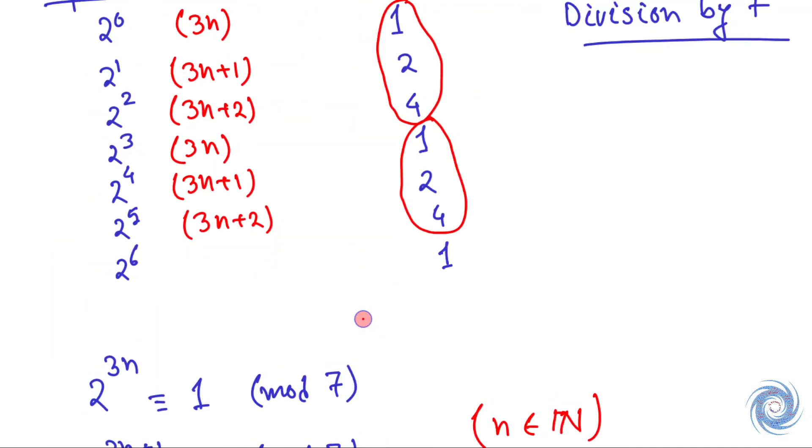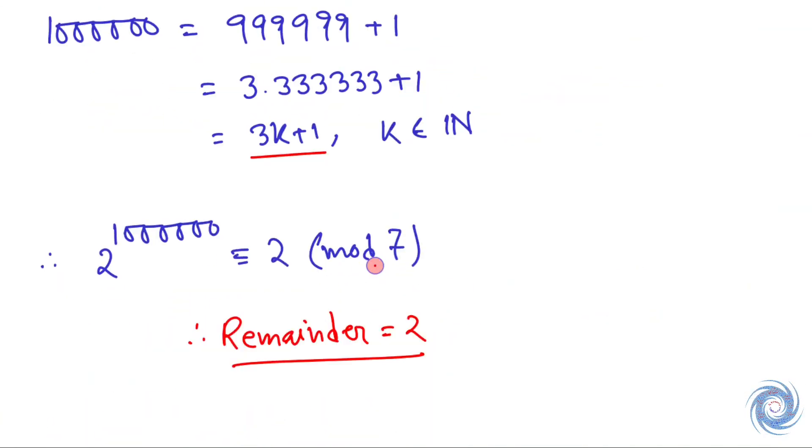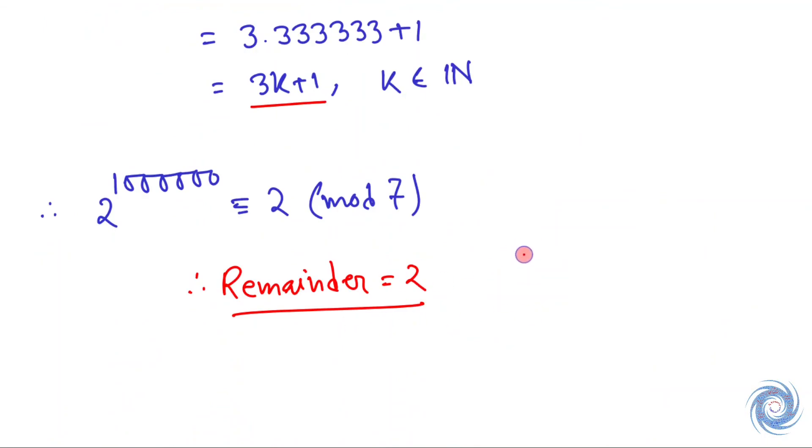In the first method, we have remainder equals 2. In the second method, we also have remainder equals 2. So we are done. Thank you.